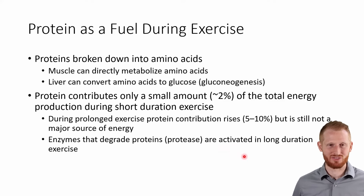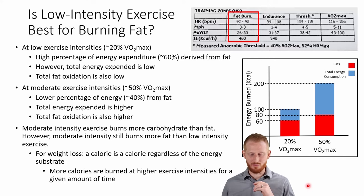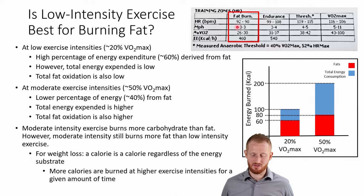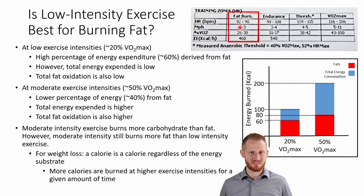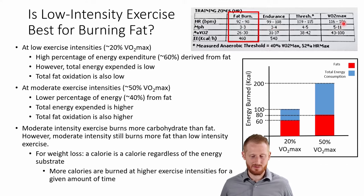Some of the enzymes — proteases — that perform protein catabolism are activated by long-duration exercise. Now let's talk about the fat burning zone, which is printed on a lot of gym machines and posters. An example here shows various heart rate zones, with the fat burning zone at fairly low intensity — in this case 92-98 beats per minute — while the VO2 max heart rate is around 186 beats per minute for this person.